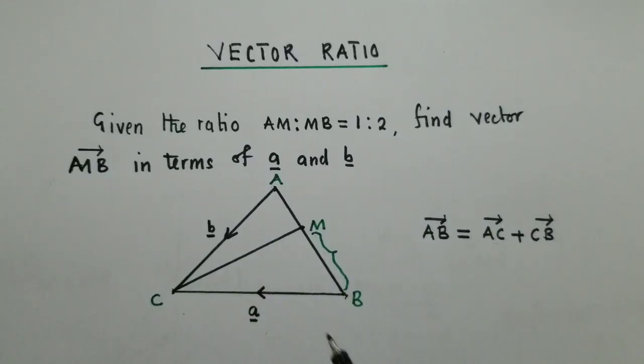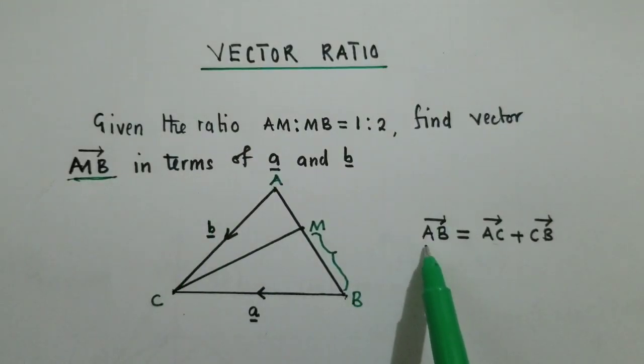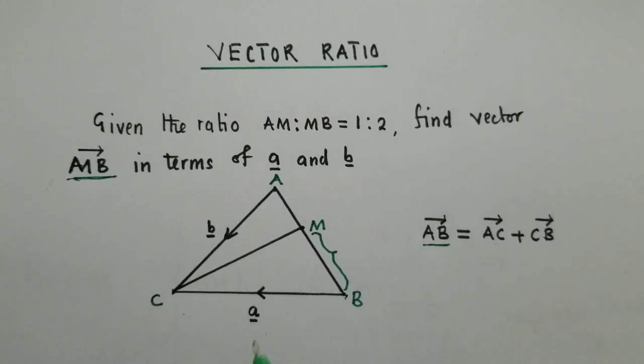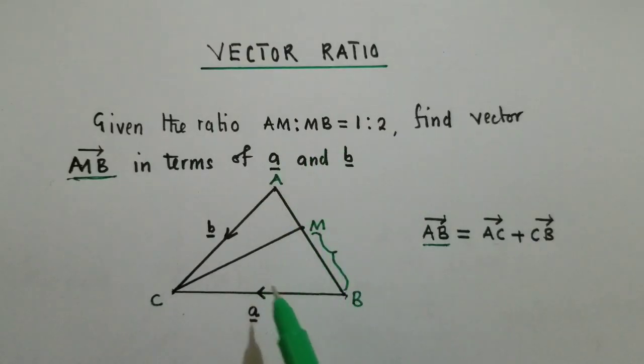So maybe the question may be: we are looking for MB, but here we've started with AB. Why? It's because MB is falling on this line, which is vector AB. And we're taking advantage of the ratio.